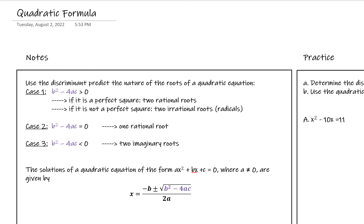We're going to get two real answers. If it's a perfect square, we'll get two rational roots, because our square root is going to work out fine and we'll just get an actual answer — two of them. If it's not a perfect square, we're going to have two irrational roots. That's the situation where we'll just simplify our radical.